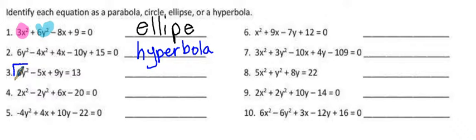At number 3, we notice that there's only one squared thing. Any time there's only one squared, it automatically has to be a parabola.